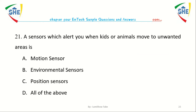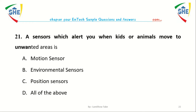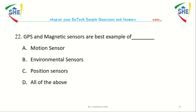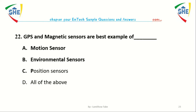Question number twenty-one: A sensor which alerts you when a kid or animal moves to an unwanted area is called dash. A. Motion sensor, B. Environmental sensor, C. Position sensor, D. All of the above. Question number twenty-two: GPS and magnetic sensors are the best example of dash. A. Motion sensor, B. Environmental sensor, C. Position sensor, D. All of the above.